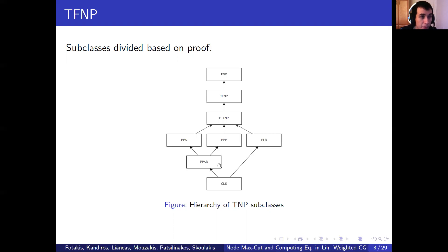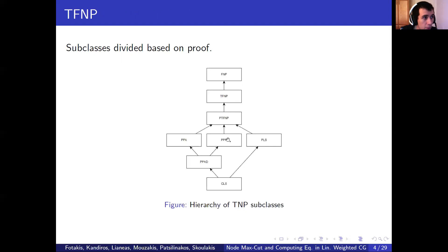One of the most famous problems in TFNP is that of Nash equilibrium, which is contained in PPAD and shown hard for this class. While that is one of its most celebrated results, TFNP has seen substantial active research in recent years, with researchers finding more and more connections to other sub-fields of mathematics and computer science, and its ranks constantly growing with more complete problems added to it.